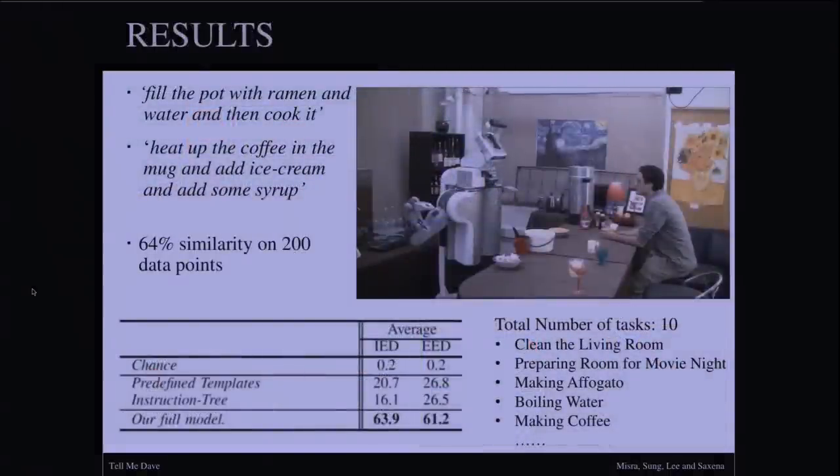Here are some of the examples from our corpus, and these two are the ones that our model can handle. As you can see for this sentence, fill the pot with ramen and water, and then cook it is fairly ambiguous. In our paper, we reported our results on 200 data points on which we were able to get 64% accuracy with the ground truth sequence.